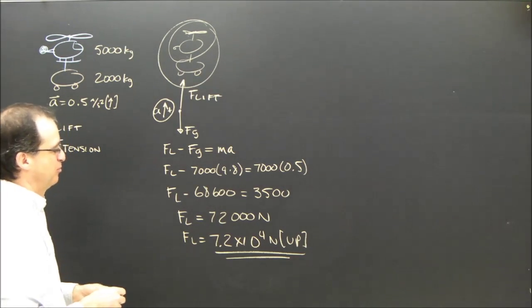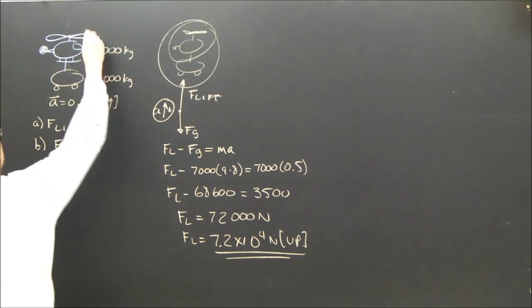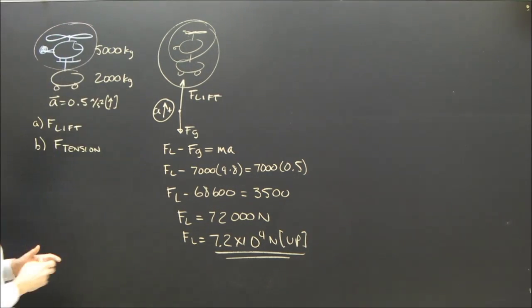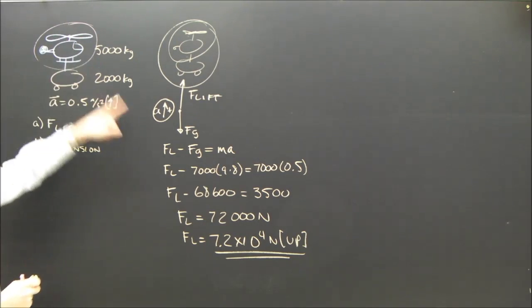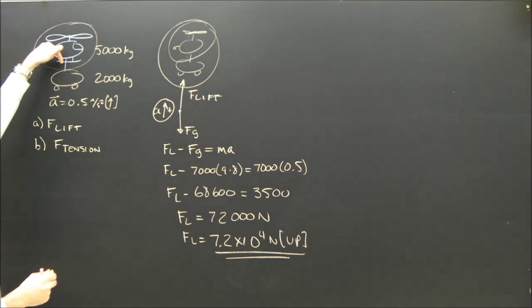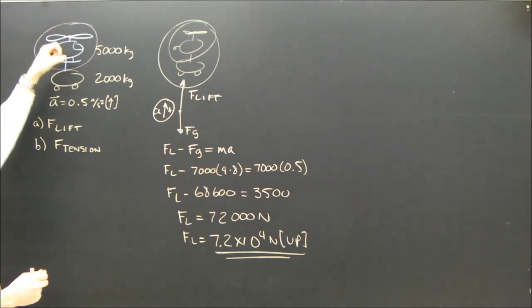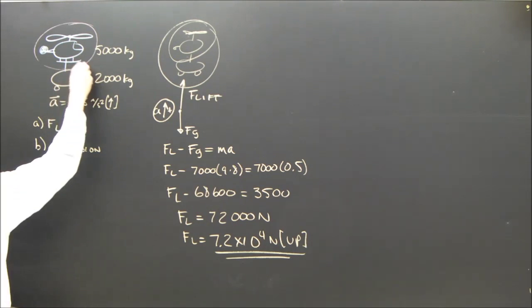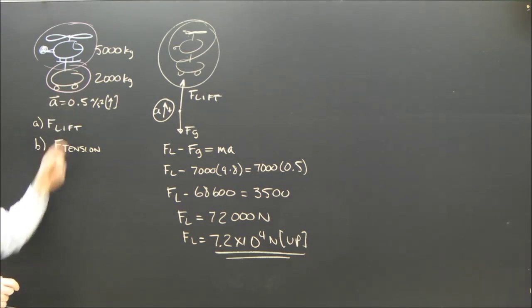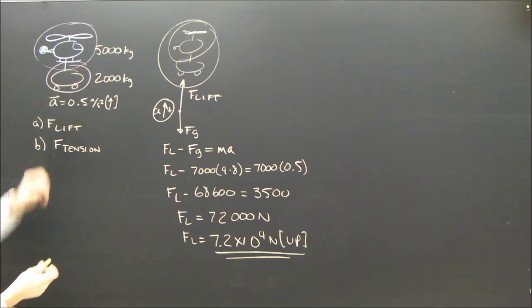But now I want to know what's going on with the rope. So I can do it two ways. I can look at just the helicopter and say the force of lift up, which I now know, minus the force of tension down equals MA and the mass is 5,000. Or I could look at just the car. I could say we could isolate just the car and look at what it's doing. And that's what I'm going to do.